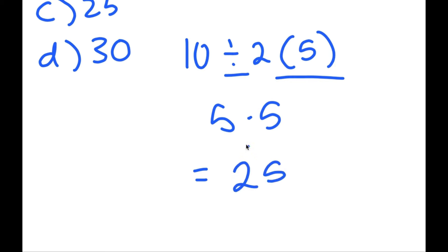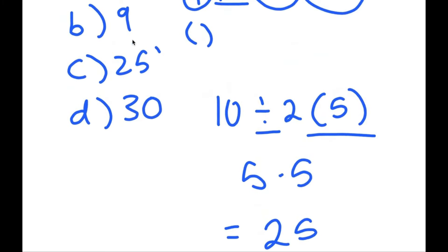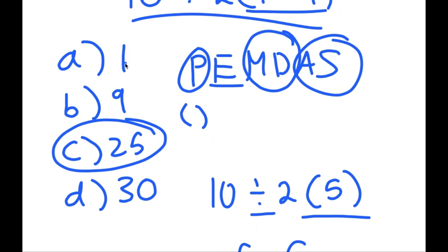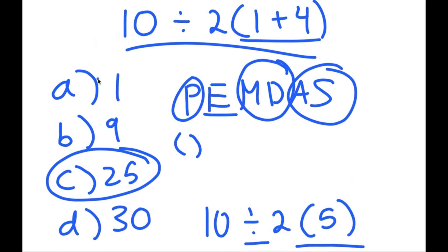5 times 5 is 25, so C, 25, is the answer. Thank you for watching. Please make sure to leave a like, subscribe, and share this video with your friends or family — see if they get it right.